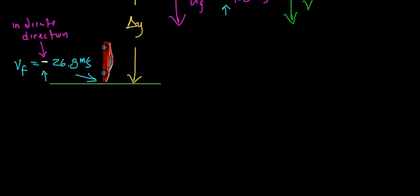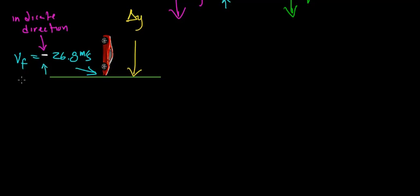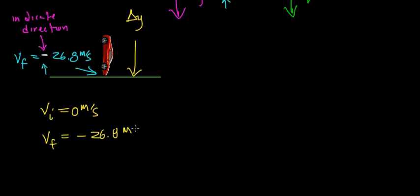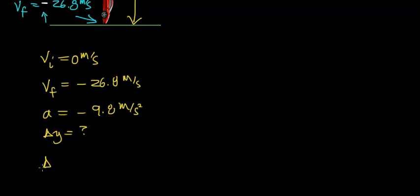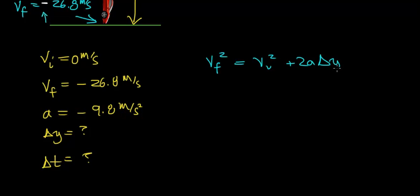In order to figure out the height we're going to have to drop this car from, we're going to need to use one of our kinematic equations. Let's summarize the information: the initial velocity of this car is 0 meters per second; the final velocity is negative 26.8 meters per second; the acceleration is negative 9.8 meters per second squared; we don't know the distance the car is going to fall; and we don't know how long it takes to speed up. The kinematic equation I'm going to use is: final velocity squared equals initial velocity squared plus 2 times the acceleration times the height.